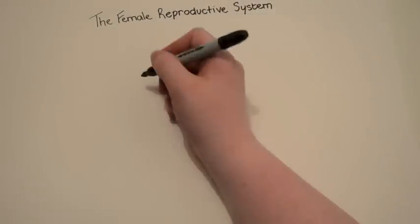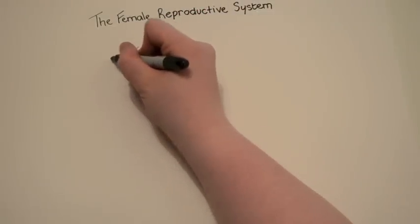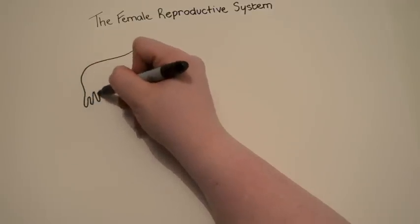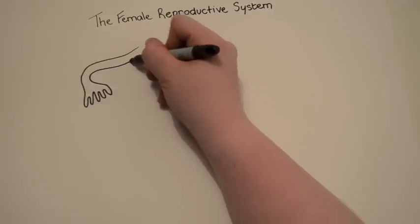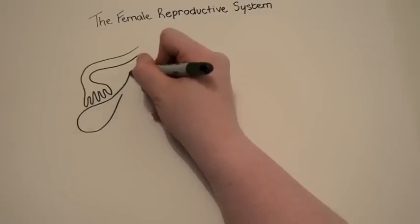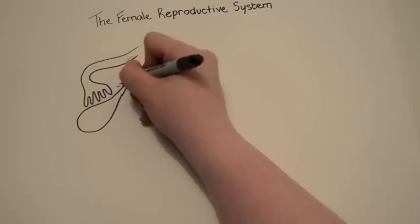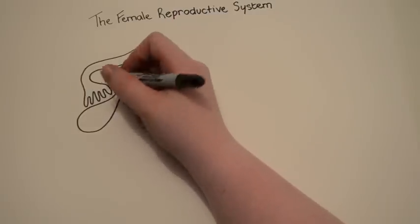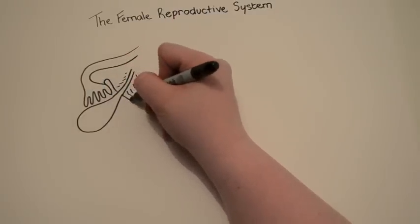The female reproductive system is also responsible for gametogenesis and steroidogenesis. We are just going to give you a quick overview of the female reproductive system. This is the ovary. It is analogous to the testis in the male reproductive system.